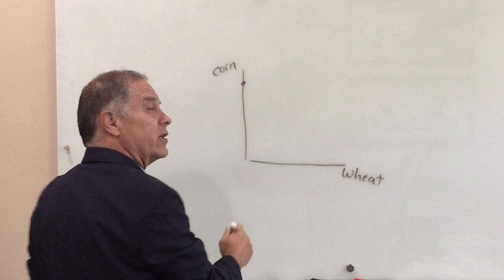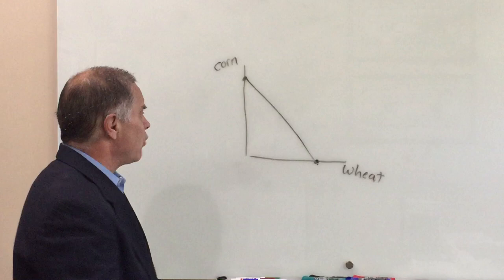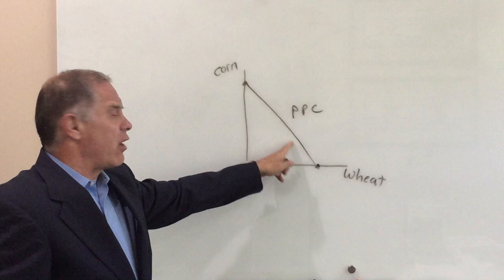If he grows all corn, he can grow this much. If he grows all wheat, he can grow this much. And then he can trade off his land in between and grow half corn, half wheat, etc. This is what we call the production possibility curve or the production frontier.